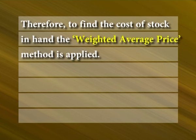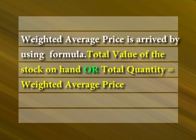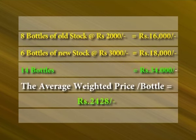The cost of individual bottles is difficult to maintain as the price changes every time an order is placed due to government policies. Therefore, to find the cost of stock in hand, the weighted average price method is applied. Weighted average price is arrived at using the formula: total value of stock on hand divided by total quantity equals weighted average price. Example: 8 bottles of old stock at Rs. 2,000 each equals Rs. 16,000; 6 bottles of new stock at Rs. 3,000 equals Rs. 18,000. Total: 14 bottles for Rs. 34,000. The weighted average price per bottle is Rs. 2,428.